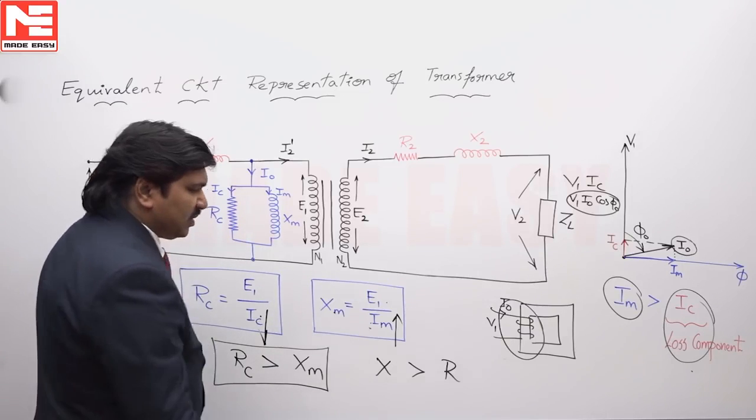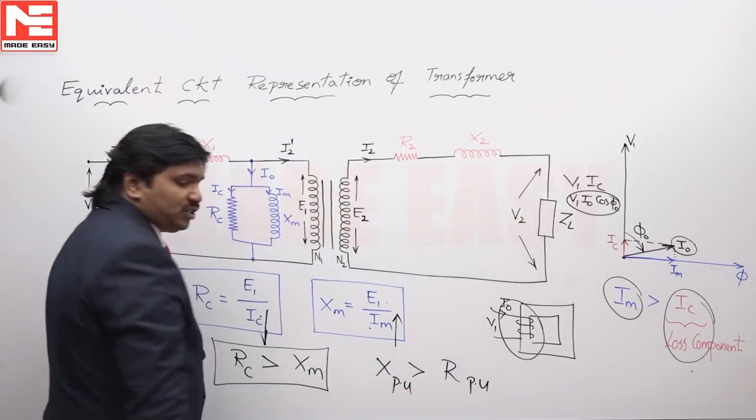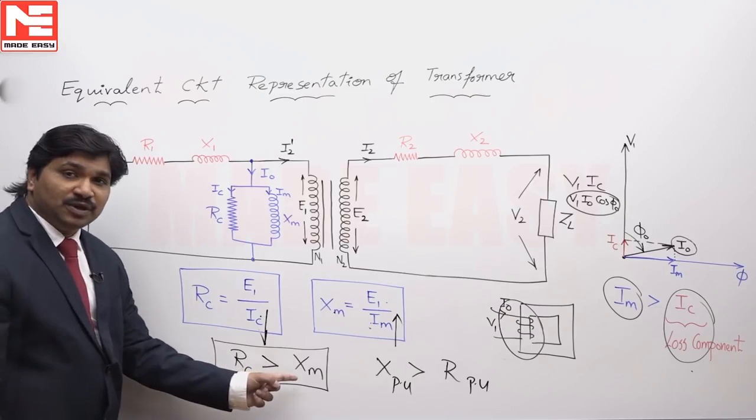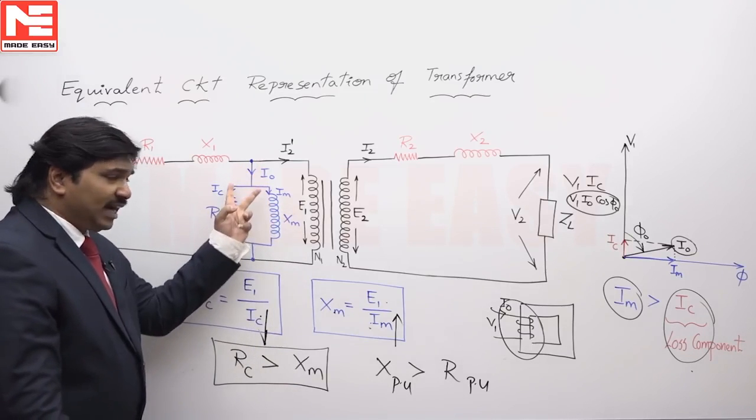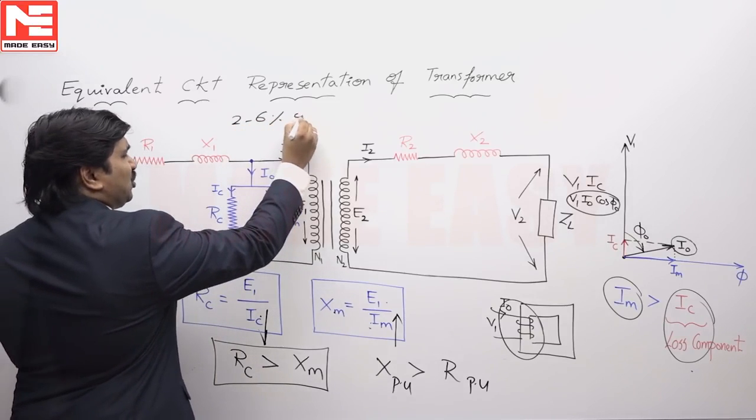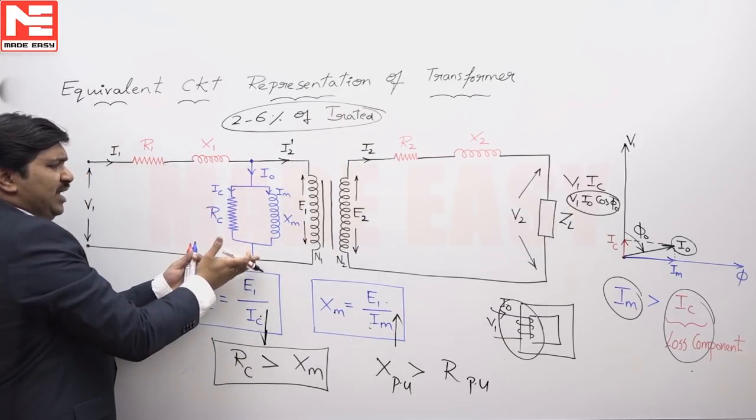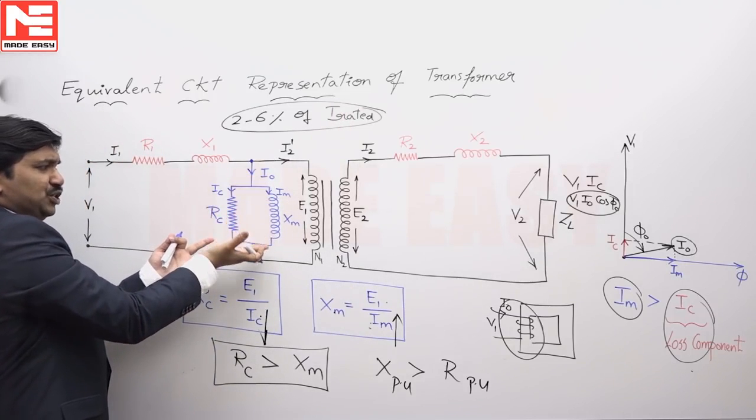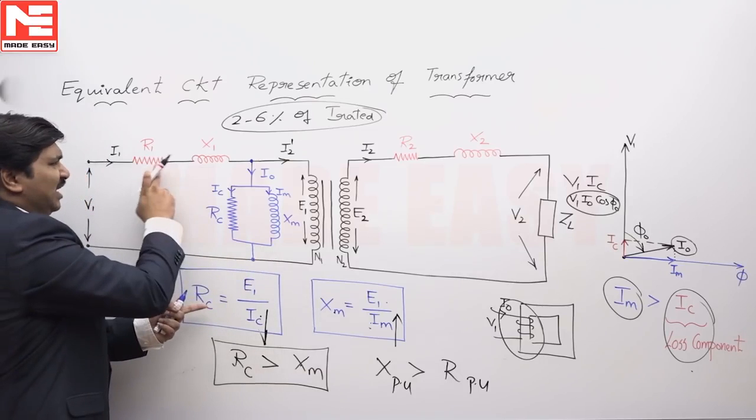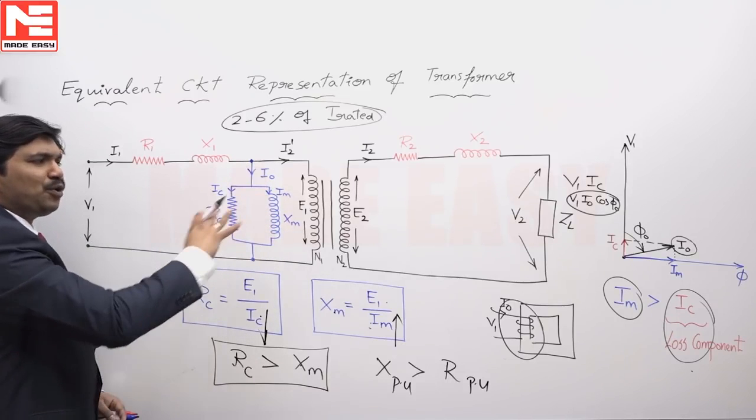If it was given the per unit resistance of a transformer, per unit reactance of a transformer, R_C, X_M, these values are very very big values. Why? Because the values depend on currents and the no-load current is 2 to 6 percent of rated. When a low current is flowing in a circuit, the impedance of the circuit is very very high. R_C, X_M values are practically extremely high. These are very very small compared to this branch. That is why we neglect this circuit sometimes in the approximate circuit for analysis purpose.